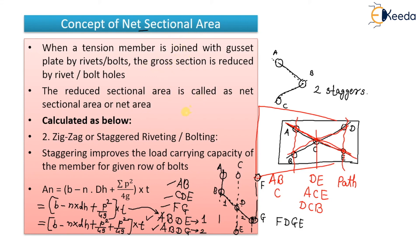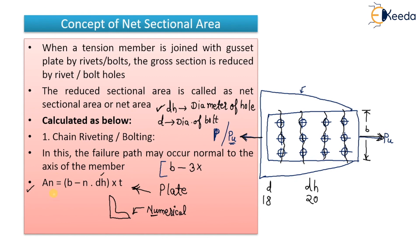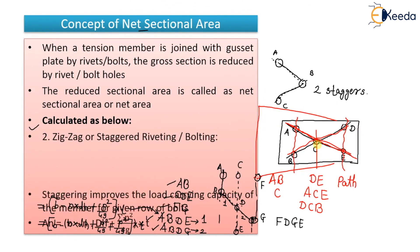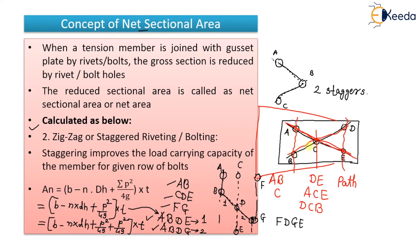You now have the concept of what net sectional area is — for plates as well as for angles, although I have not explained the formula for angles. We have seen how to calculate the net sectional area for plates: both formulas are for plates. The first was for chain bolting, and the second for staggered bolting. For angles connected to a gusset plate, I will show that in the numerical directly.